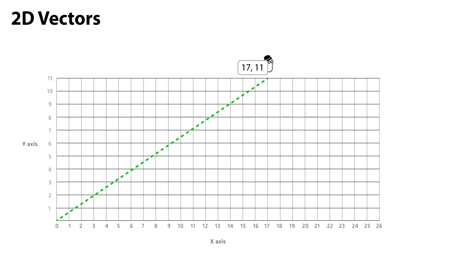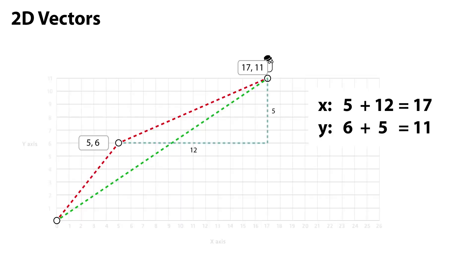You should note that the components of the final position are equal to the sum of the components of the two vectors. 5 plus 12 is 17 in the x axis, and 6 plus 5 is 11 in the y axis. This also applies to subtraction.